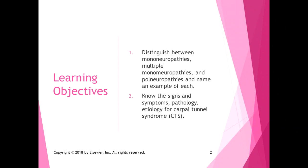We're going to talk about the dysfunction of peripheral nerves and different neuropathies. The learning objectives for this section are to be able to distinguish between the different types of neuropathies: mononeuropathies, multiple mononeuropathies, and polyneuropathies, and to be able to name an example of each.